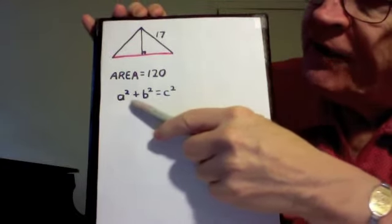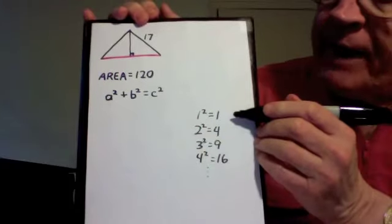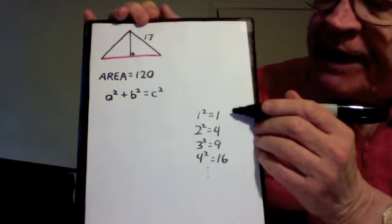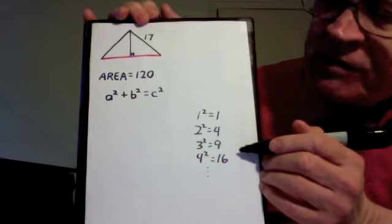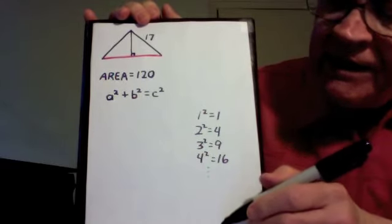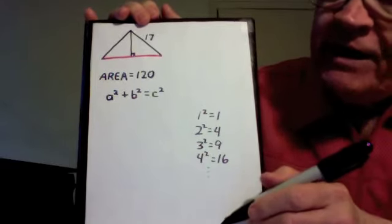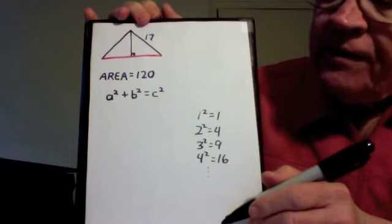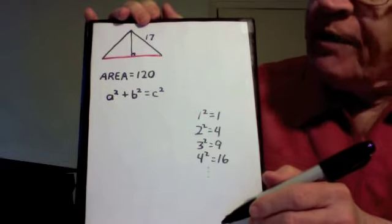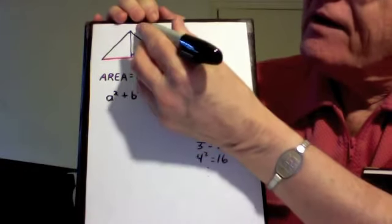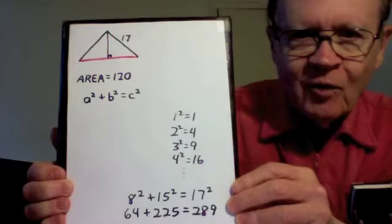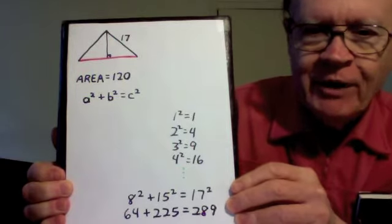We can make a table of square numbers, beginning 1 squared equals 1, 2 squared equals 4, 3 squared equals 9, 4 squared equals 16, and so on, down to 17 squared, and look for what we call a Pythagorean triple, that is, three numbers that satisfy the Pythagorean equation.